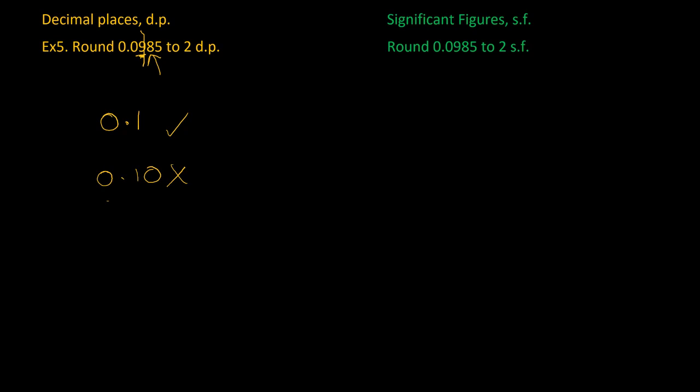Let's complete this by doing the significant figures version. Remember, we can't count those leading zeros, so the first significant figure is 9 and the second is 8. We put the line in there, look at what's after the line — it's a 5 — so it rounds up, giving us 0.099.